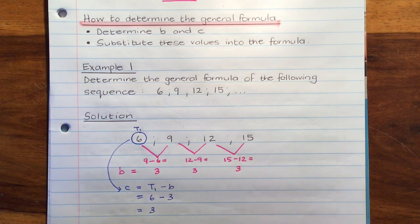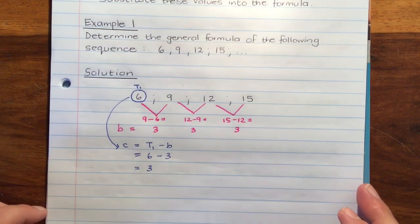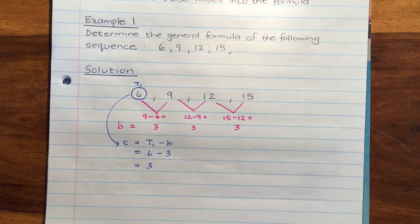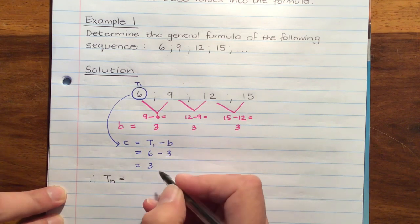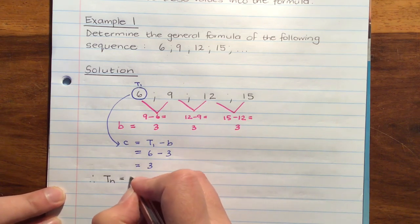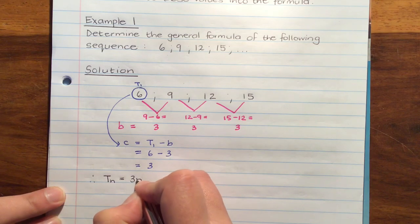Now we're ready to substitute these into the formula. So our solution is that Tn is equal to B, which is 3n, and then C, which is plus 3.